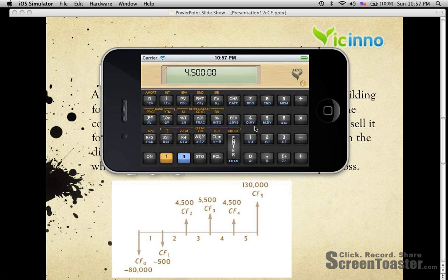And then the third cash flow is $5,500, and then pressing G, pressing CFJ.